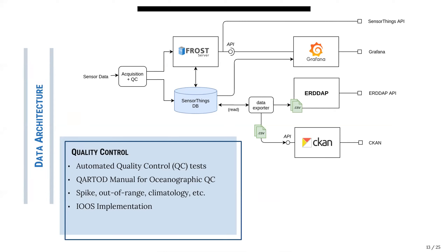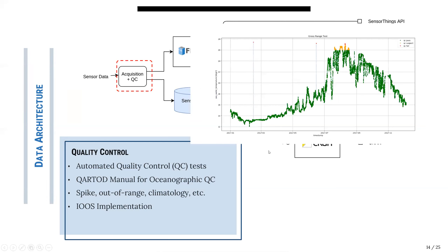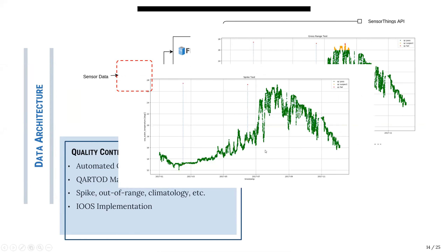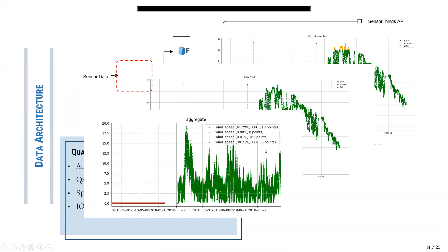We use the QARTOD manual for oceanographic quality control data, performing automated tests such as spike detection, out-of-range checks, and climatology tests. We use an open-source implementation provided by IOOS. For instance, we can detect when some data is out of range, detect spikes, and also detect when a sensor is failing and providing flat data.